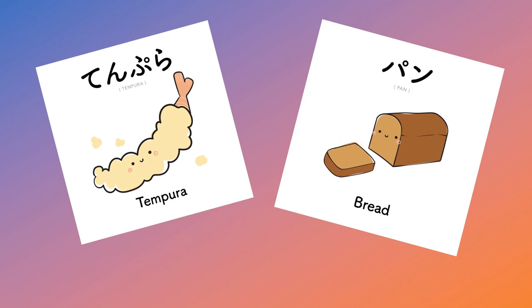Thanks to the Portuguese missionaries, an influx of loanwords came to Japan, and a handful of these loanwords are still here today — for example, tempura and pan. Tempura, we know as the battered and deep-fried fish and veggies, and pan — you might recognize that from Spanish — means bread.